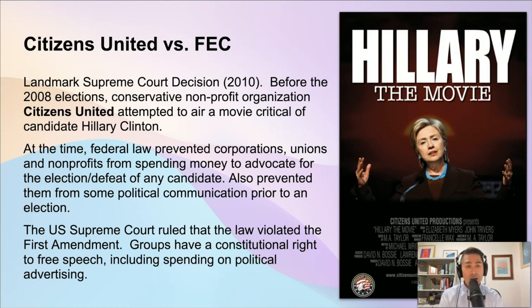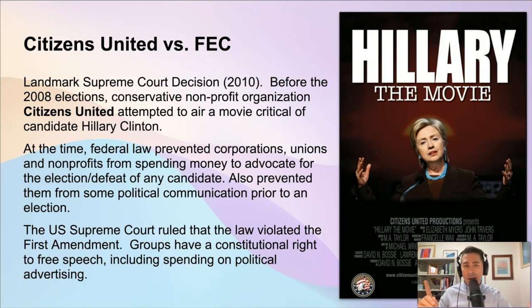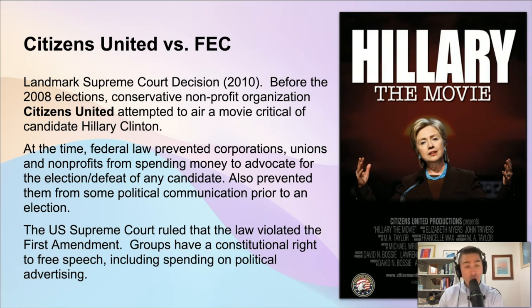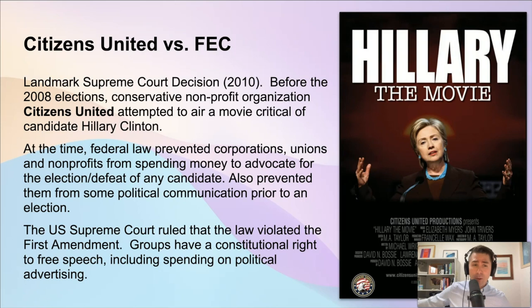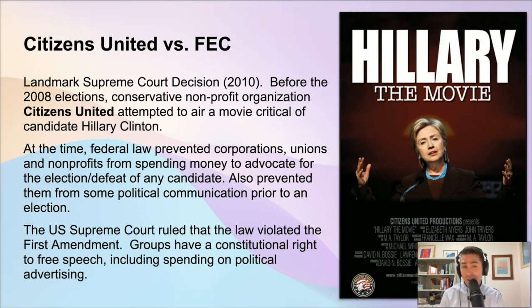The biggest change that this ruling led to was the development of something called a super PAC. A regular political action committee has limits on how much you can give to a campaign — those laws are still in place. But a corporation can spend as much as they want on campaign ads as long as they're not coordinating with the campaign. So a big organization that wants to support a candidate can run advertisements on that candidate's behalf; they just can't give money directly to the campaign or coordinate strategy with it. This gives organizations enormous power to spend money trying to convince American voters.